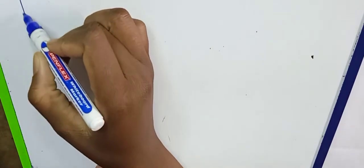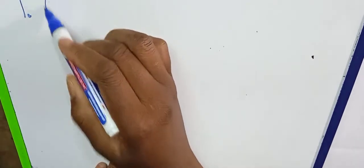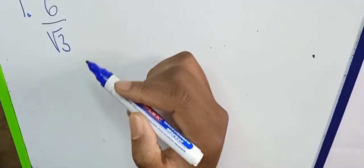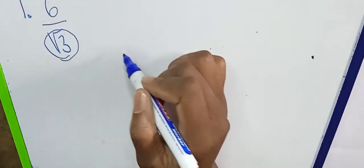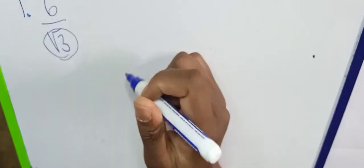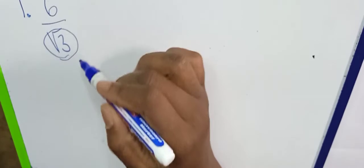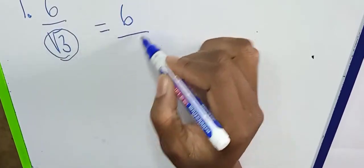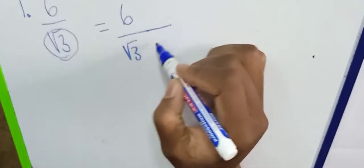Hi guys, welcome to my math tutorials. Today we are rationalizing surd numbers. What do I mean by rationalizing? For example, we have six over root three. You cannot have a surd number as a denominator — it is mathematically wrong to have a surd number as your denominator.